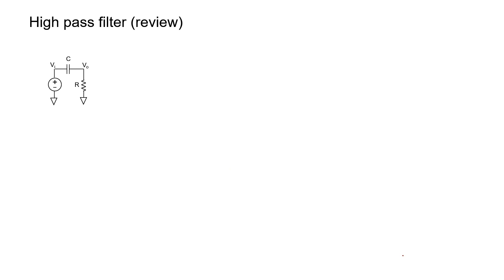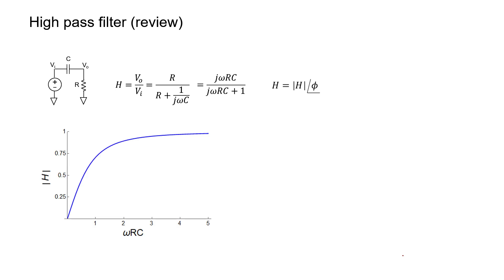Let's now look at the circuit of a one-pole high-pass filter. It's the same as a low-pass filter except that the capacitor and resistor positions have been swapped. Again, the transfer function can be found by voltage division. If we multiply every term in this expression by j omega c, we end up with a neat form of the transfer function. We have an imaginary number in the numerator and a complex number in the denominator. We can plot the magnitude and the phase separately. The magnitude plot confirms this is indeed a high-pass filter: high frequencies get through when the magnitude approaches 1, and at low frequencies the magnitude approaches 0.